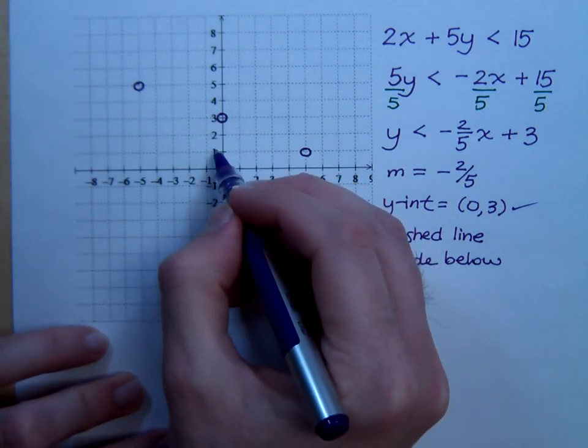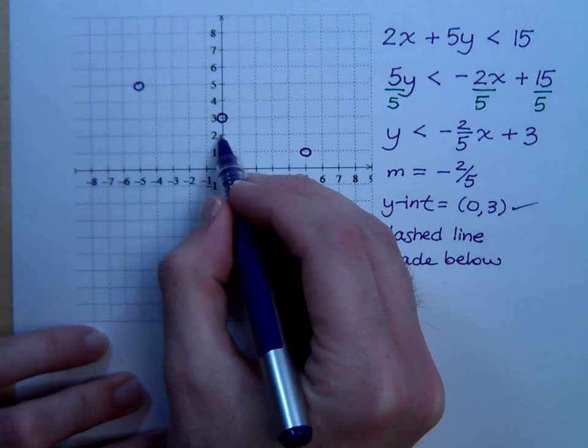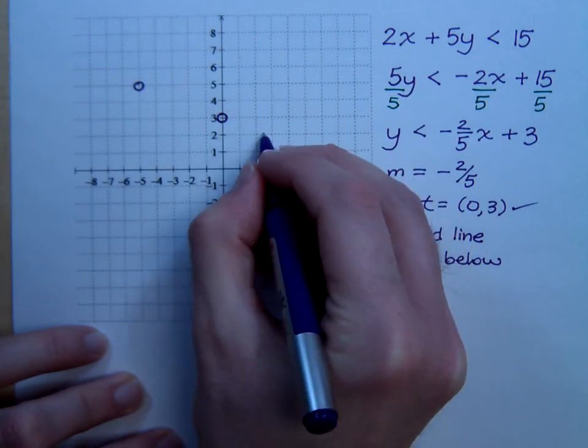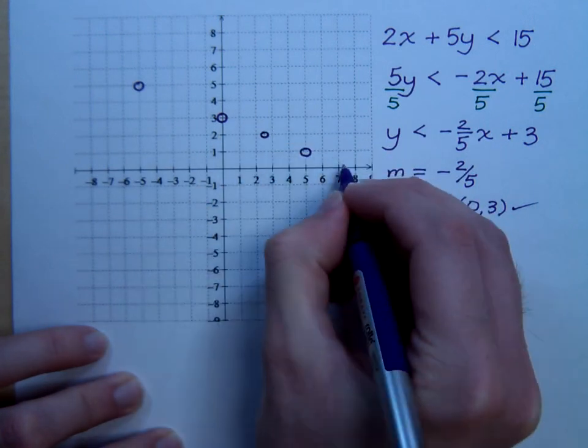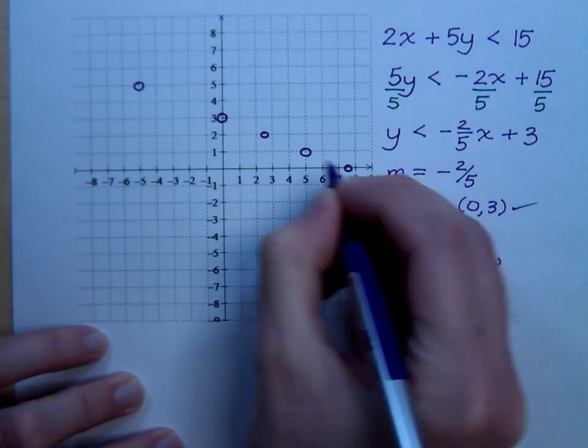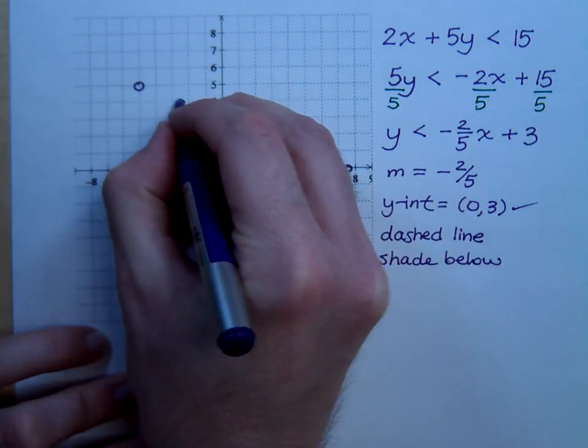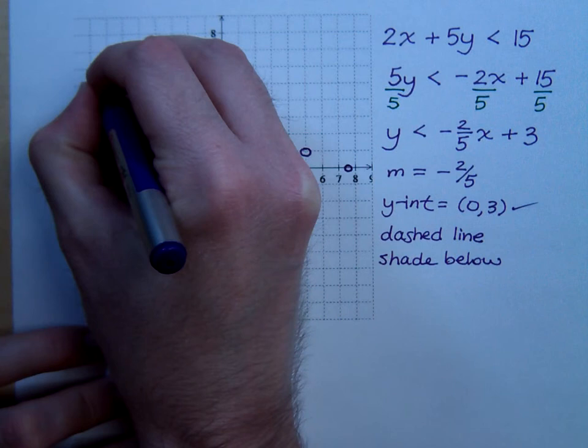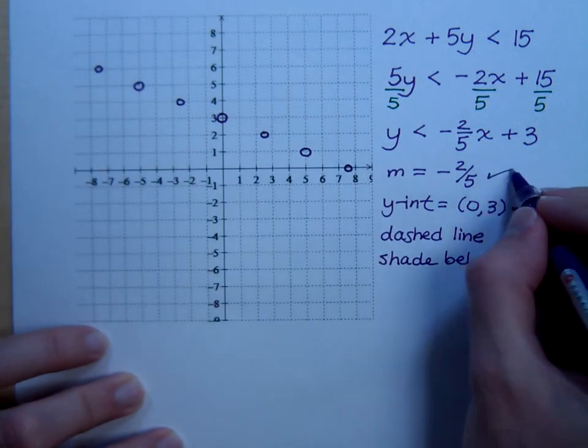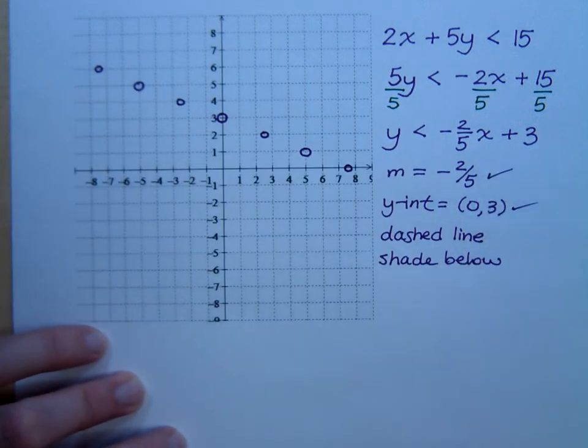Instead of going down 2, go down 1. Instead of going over 5, go over 2.5. So, there's my slope. Now, I've got to get my dashed line. So, let me.